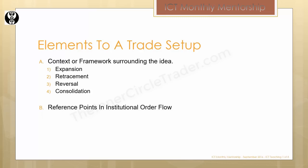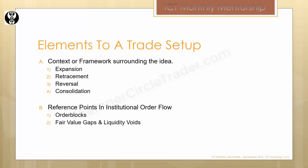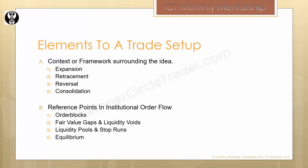The other characteristic we use for defining elements to a trade setup is using these four criteria for context and framework to specific reference points in institutional order flow. The first one is order blocks. The second one is fair value gaps and liquidity voids. Liquidity pools and stop runs. And lastly, equilibrium.